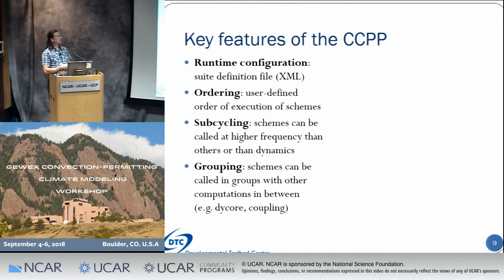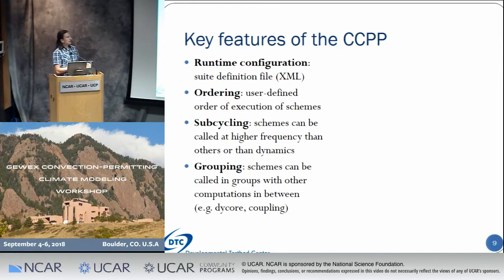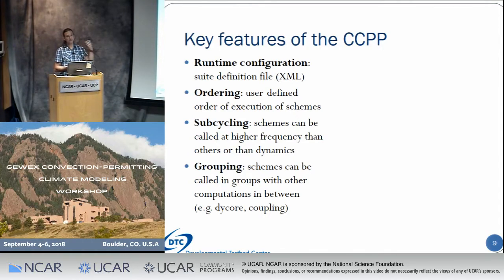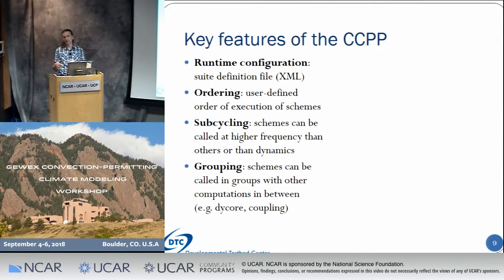The key features of the CCPP are that it's runtime configurable using an XML suite definition file that specifies which parameterizations to run at runtime. The ordering is up to the user, who can shift and move parameterizations as they wish. There is a sub-cycling capability that allows running certain schemes with higher frequencies or shorter time steps than others. And we can group schemes into different sections — for example, do radiation, then do some other stuff like dynamics, then do the rest of the physics.